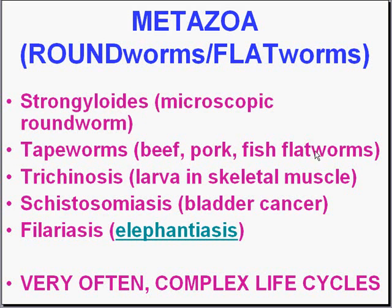Moving on to trichinosis — in the United States it's obtained from eating undercooked pork. The larvae of these roundworms live in the skeletal muscle of pigs, and if you don't cook the meat well enough, you can be infected by the worms. Once they're in humans, they can also infect human skeletal muscle as well.